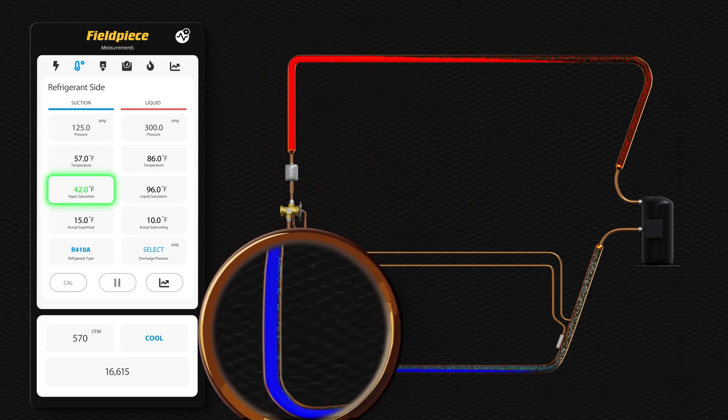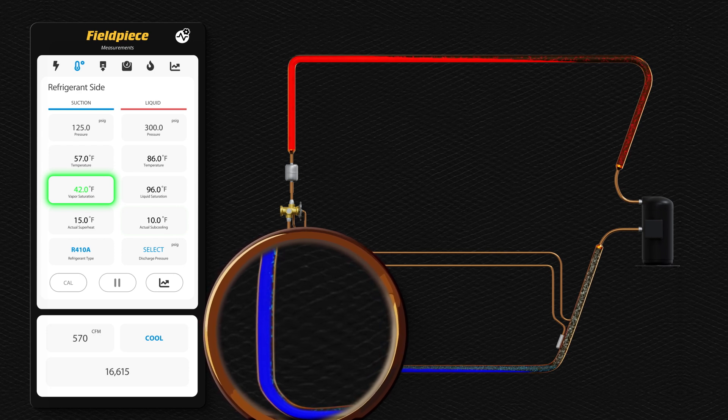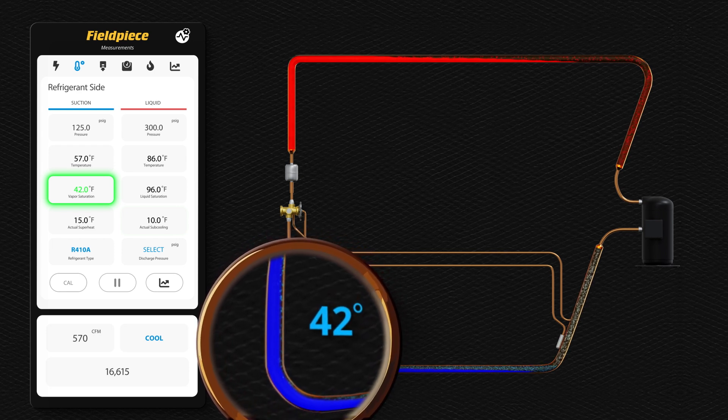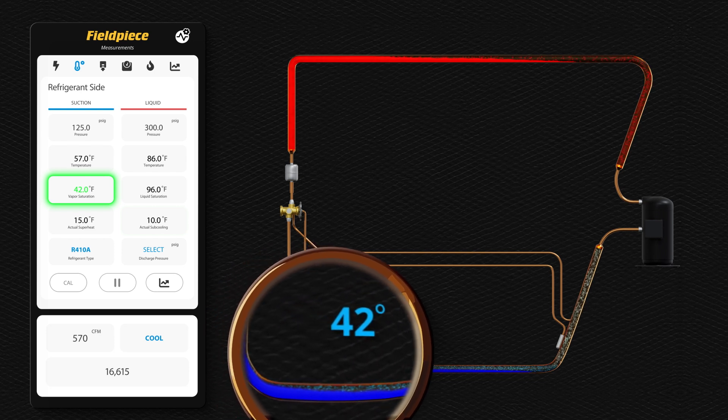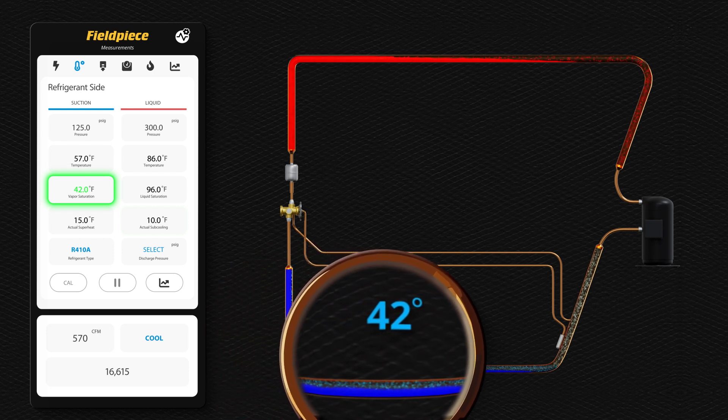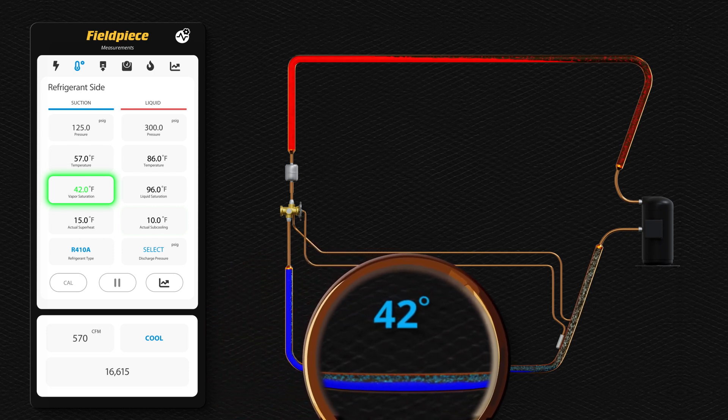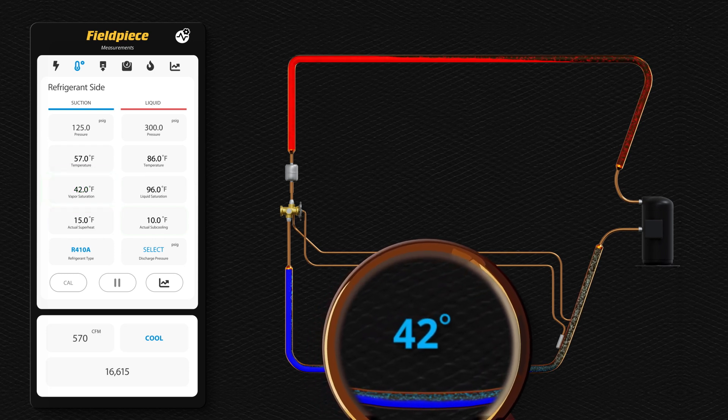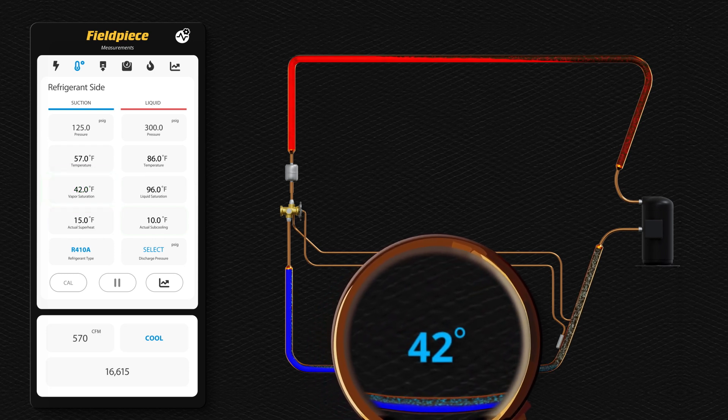The Fieldpiece app shows the saturated evaporator temperature equals 42 degrees. In the evaporator, whenever vapor and liquid exist, the refrigerant temperature will be 42 degrees. Any heat absorbed will only assist in a phase change from liquid to vapor, but the temperature will remain 42 degrees.